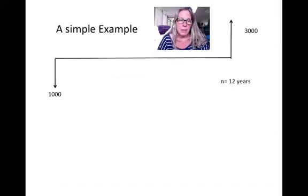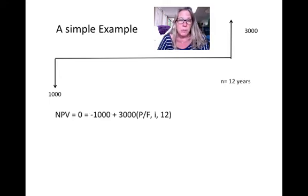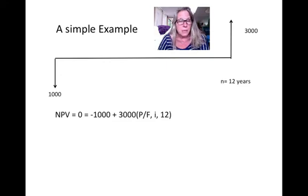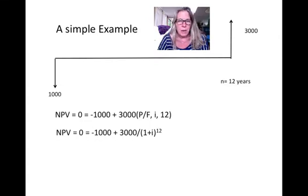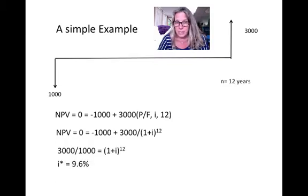A simple example: we have $1,000 invested and then 12 years later we get $3,000 back. We set up a net present value equation: minus $1,000 plus $3,000 times the P-given-F factor at i for 12 years, set equal to zero, with i as the unknown value. Using the actual equation to solve for i directly, we get i equal to 9.6%.